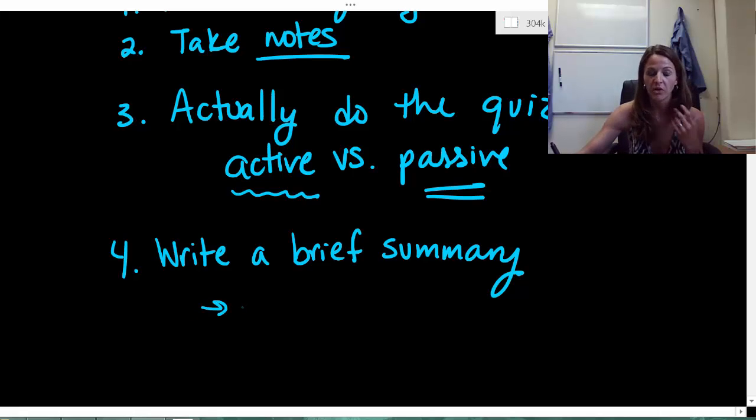Basically what you're going to do is bullet point the main points. So even if you're just writing out two things, scientific notation, sig fig rules, that's fine. We just need to identify the main points.